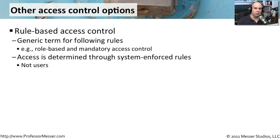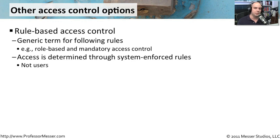You may hear access control referred to as rule-based access control. This is more of a high-level way to describe how rights and permissions are given out. Rule-based and mandatory access control are two types, because those access control methods are determined by the system, not by individual users. These predefined rules and processes give access to certain people based on a group they belong to or a particular security level, and it doesn't matter what a user wants to reconfigure.